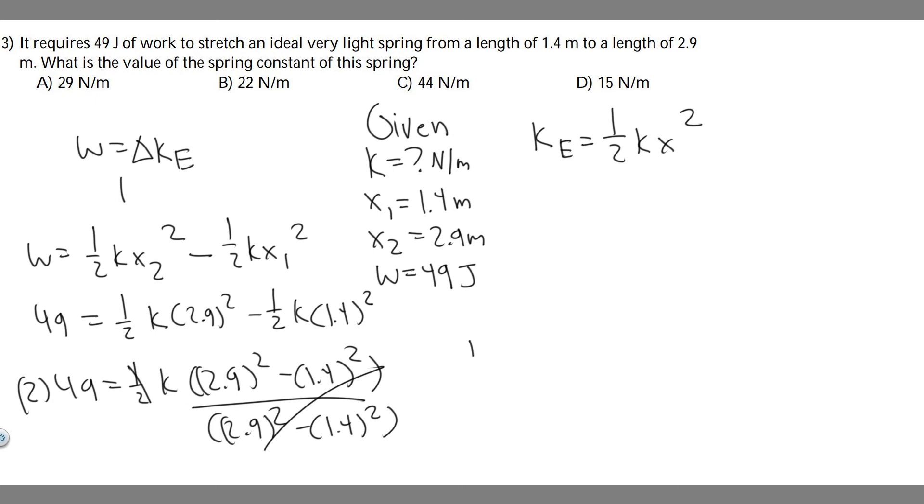So just keep in mind I'm doing that over there. And so you're going to get k is equal to 2 times 49, so this is just 98, and you divide by 2.9 squared minus 1.4 squared.